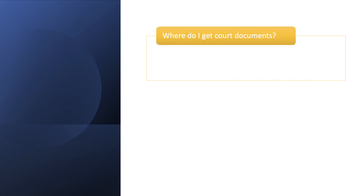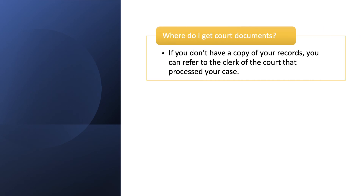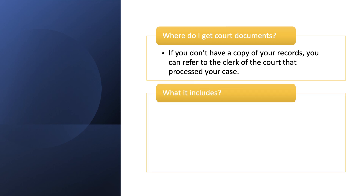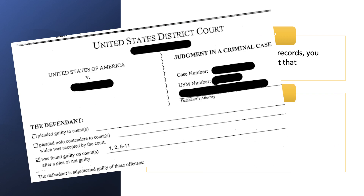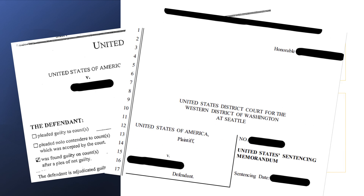Court documents: Where do I get court documents? If you don't have a copy of your records, you can refer to the clerk of the court that processed your case. The indictment, information, or complaint is the formal document that lists your charges and a brief description of the facts of the case. Information is usually filed by the prosecuting attorney and indictment by a grand jury. We also need the judgment or sentencing documents, which list your convictions.